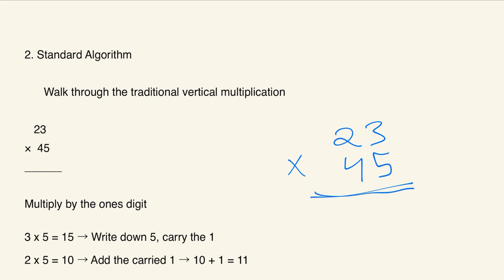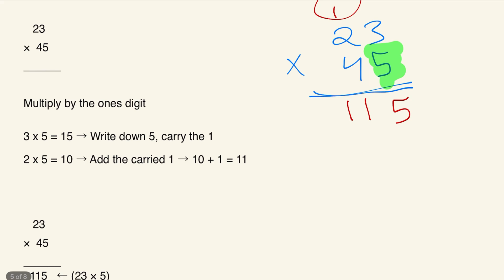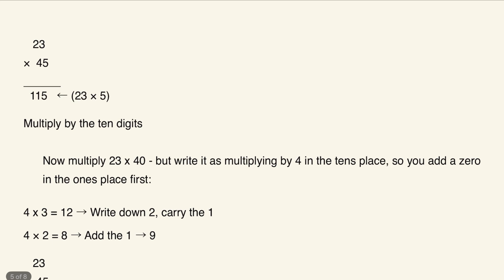First, multiply by the ones digit. We'll use 5 for now. So 3 times 5 is 15 — write down the 5 and carry the 1. Then 2 times 5 is 10, plus the carried 1 equals 11, so we write 11. That gives us 115, which is 23 times 5.